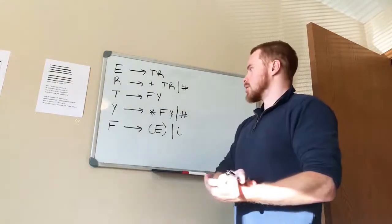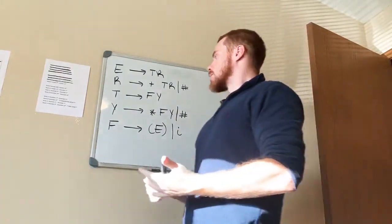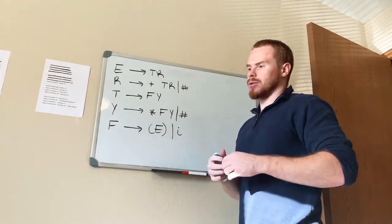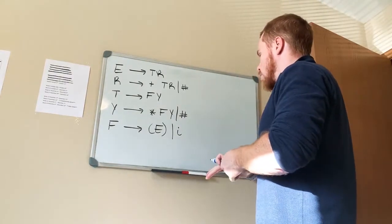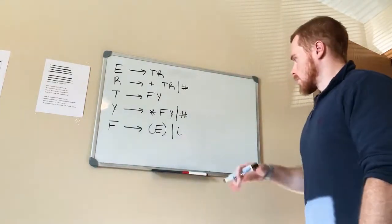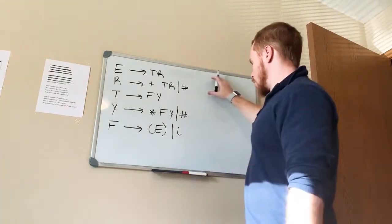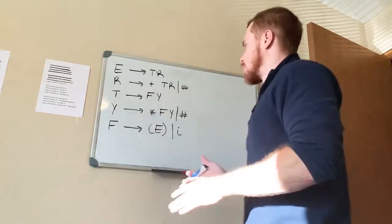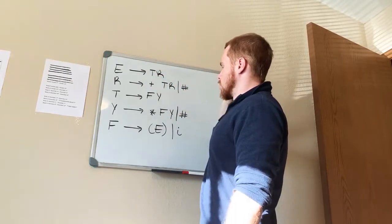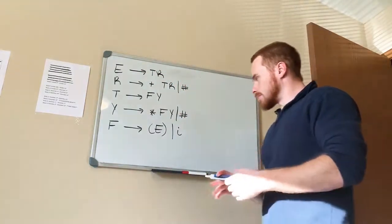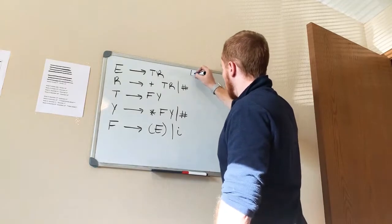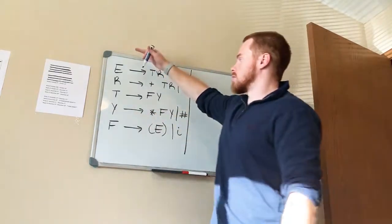This is from a Concepts of Programming Languages course covering grammar, syntax, and a bit about compilers. You'll go over this in that class if you have to take it in computer science. Basically, you're getting to the point where you can build a parsing table and kind of like a compiler. To do that, you need to find the first set and the follow set. We're going to go over finding the first set of these grammar rules.